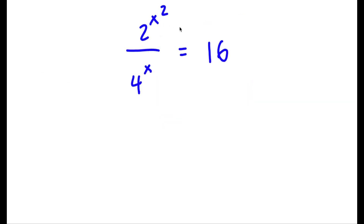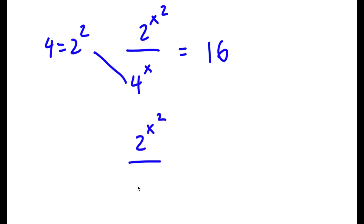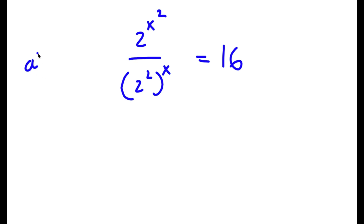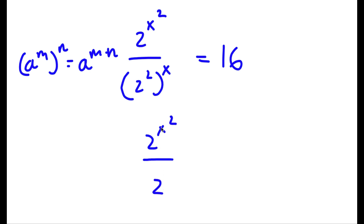Alright, so I have 2 to the power of x squared over 4 to the power of x is equal to 16. The first thing I'm going to do is change 4 to the power of x, because 4 is the same thing as 2 squared. So if I substitute in 2 squared for 4, I get 2 to the power of x squared over 2 to the power of 2 to the power of x, which is equal to 16. Now, using the rule a to the power of m to the power of n equals a to the power of m times n, 2 to the power of 2 to the power of x becomes 2 to the power of 2x. So this is equal to 16.